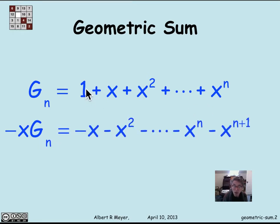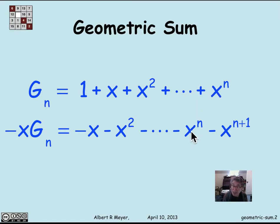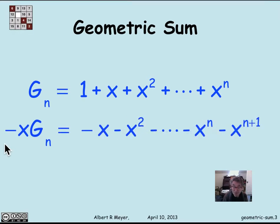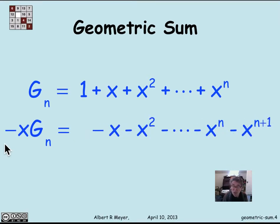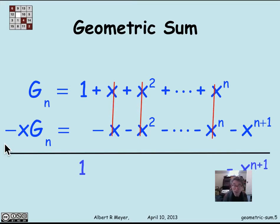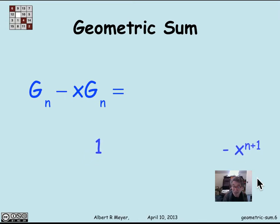Looking ahead, I'm going to subtract: 1 times x is minus x, x times x is x squared, down through x to the n minus 1 times x gives the x to the n term, and finally there's an extra term from right-shifting x to the n, giving x to the n plus 1. Now let's do this subtraction, lining the terms up so they're easy to subtract. All the terms in the middle cancel, so g_n minus x times g_n equals 1 minus x to the n plus 1.